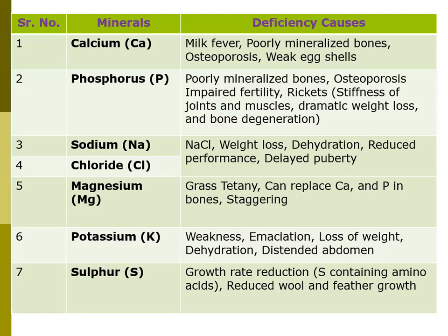Let's start with the deficiency syndromes. In my previous lecture I discussed these minerals along with their sources, functions, and importance. In this lecture I will be discussing the deficiency symptoms within animals. There are almost seven macro minerals: calcium, phosphorus, sodium, chloride, magnesium, potassium, and sulfur.